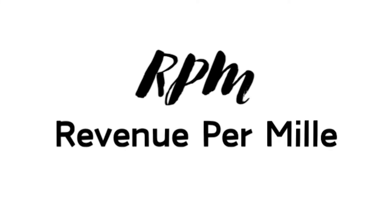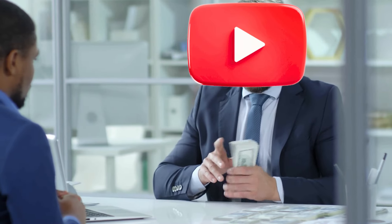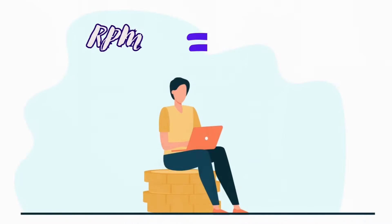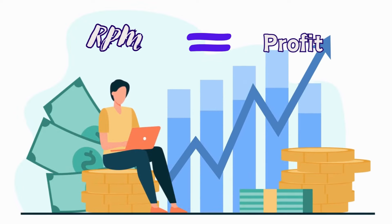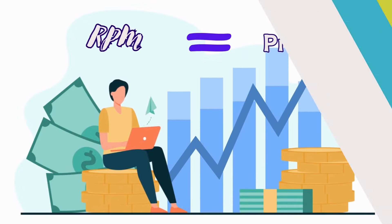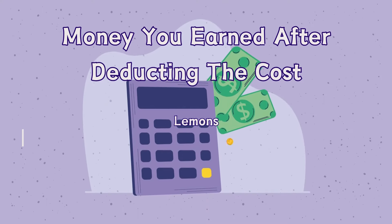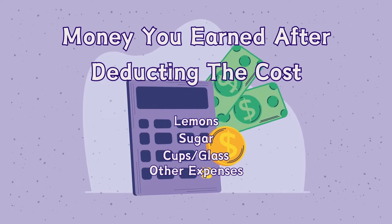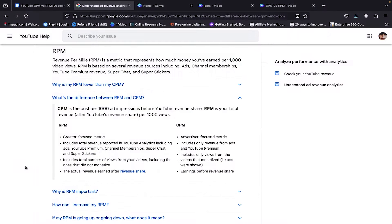Now let's talk about RPM — this is where the real magic happens. It's what you actually take home after accounting for YouTube's cut and other expenses. In our lemonade example, RPM would be your profit: the money you pocket after deducting the cost of lemons, sugar, cups, and other expenses. It's a more comprehensive metric that gives you a clearer picture of your bottom line.